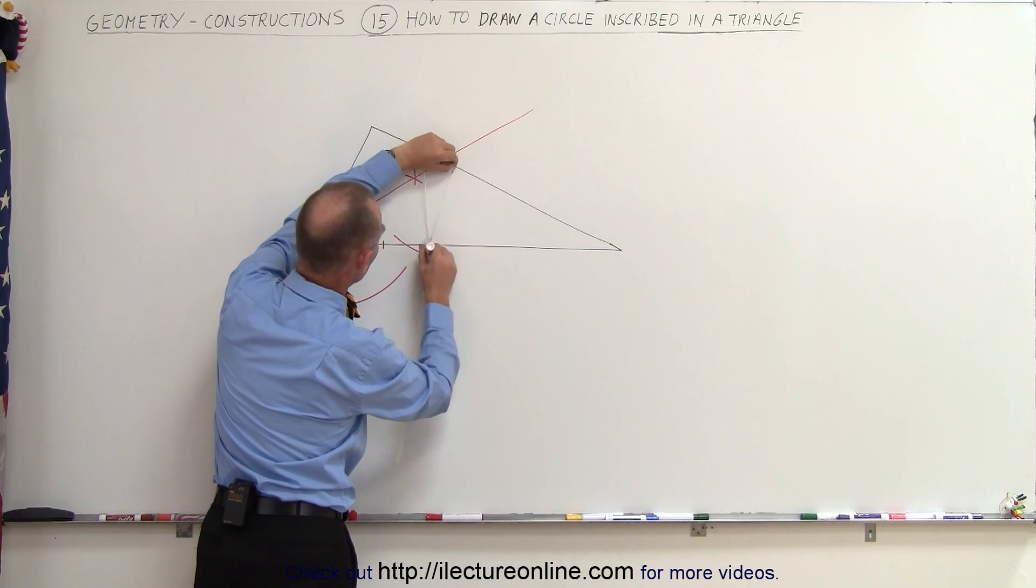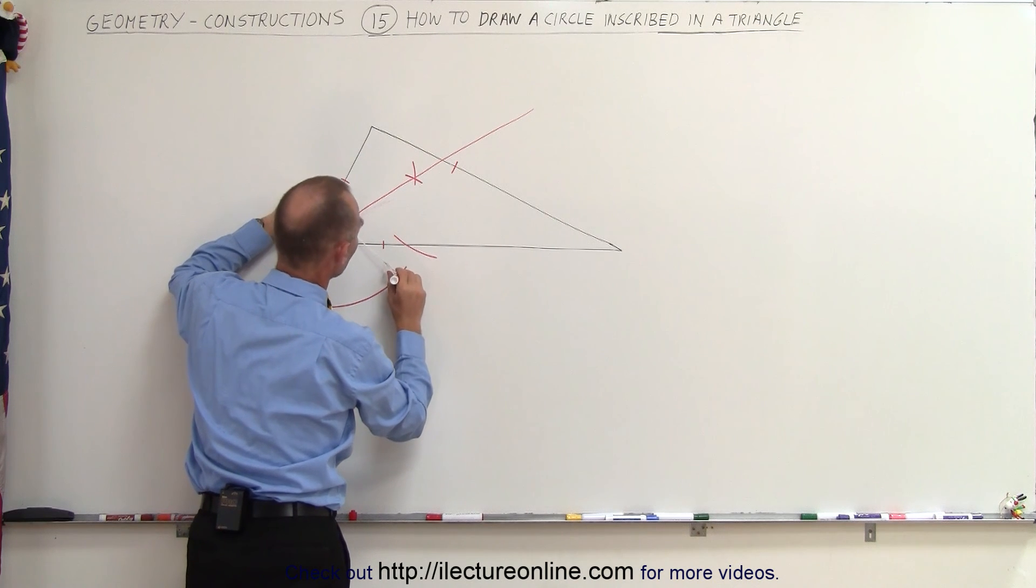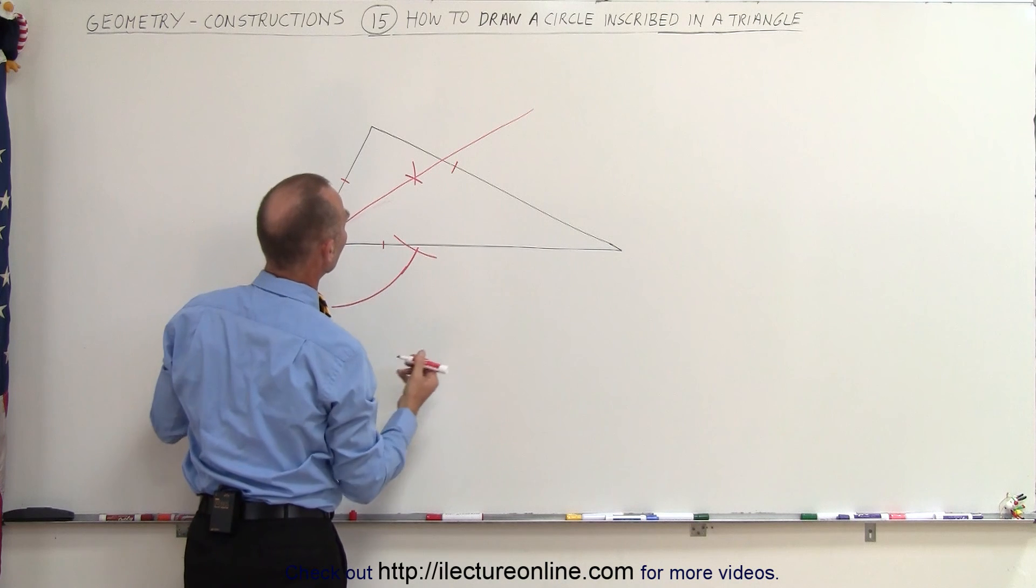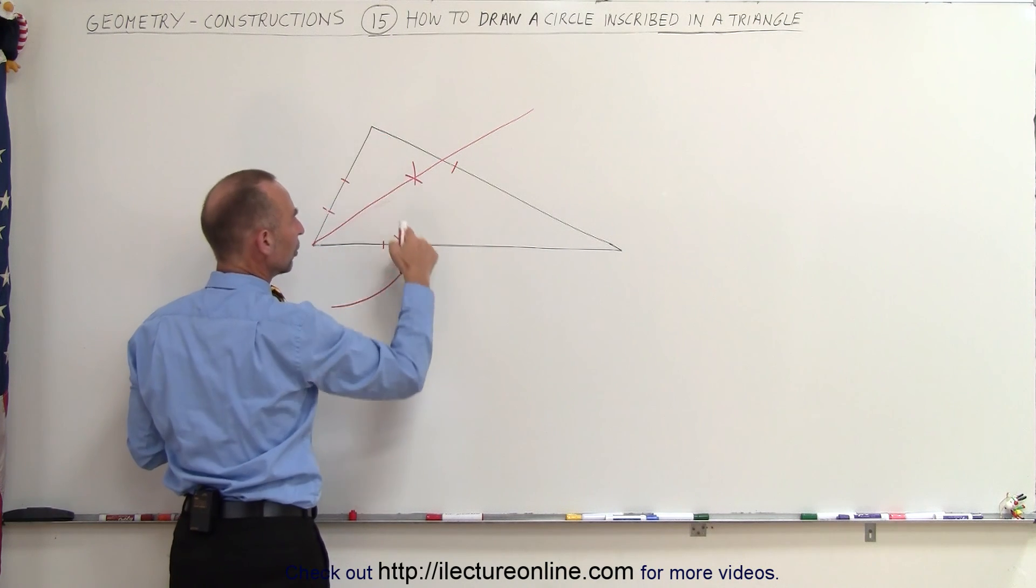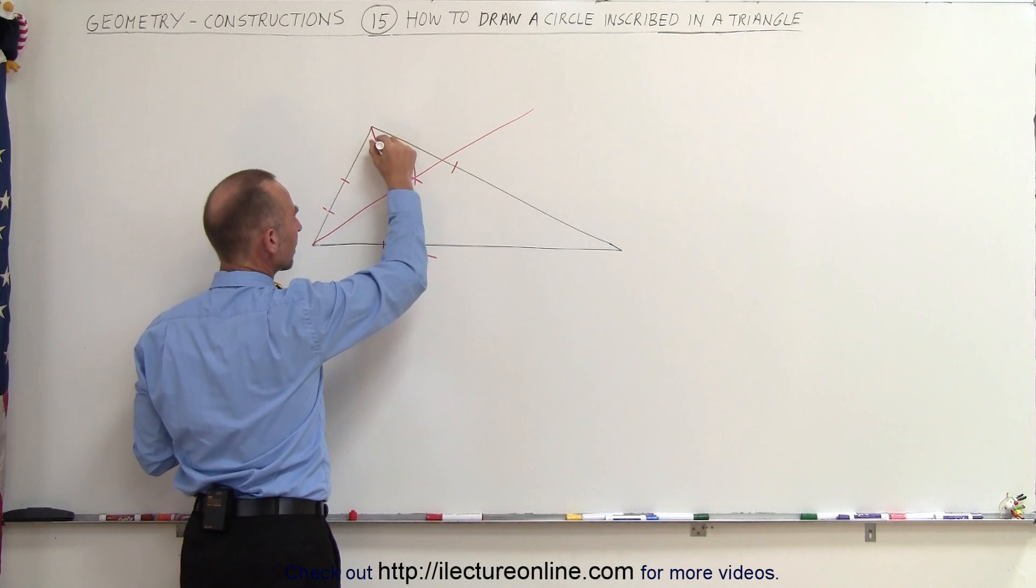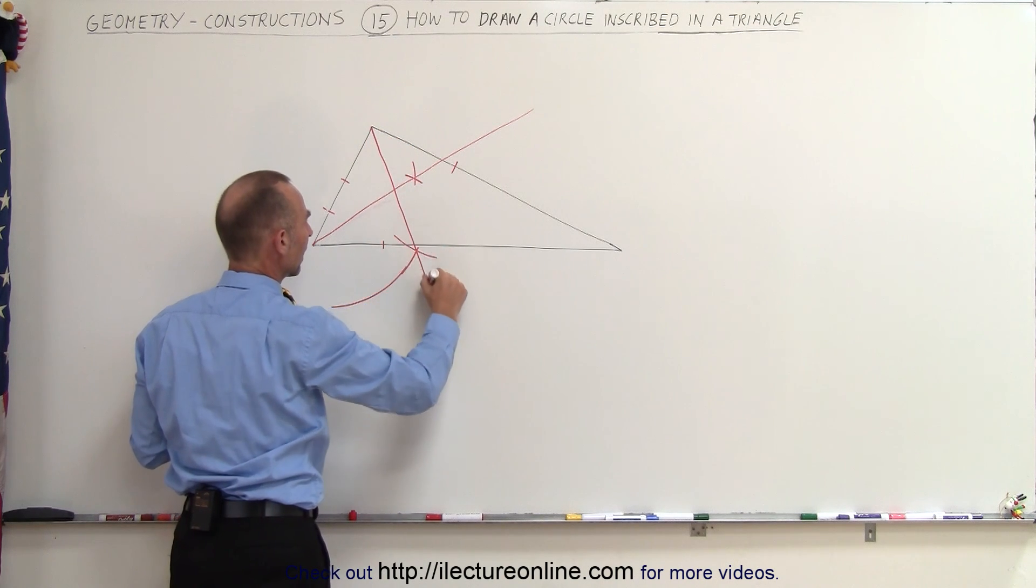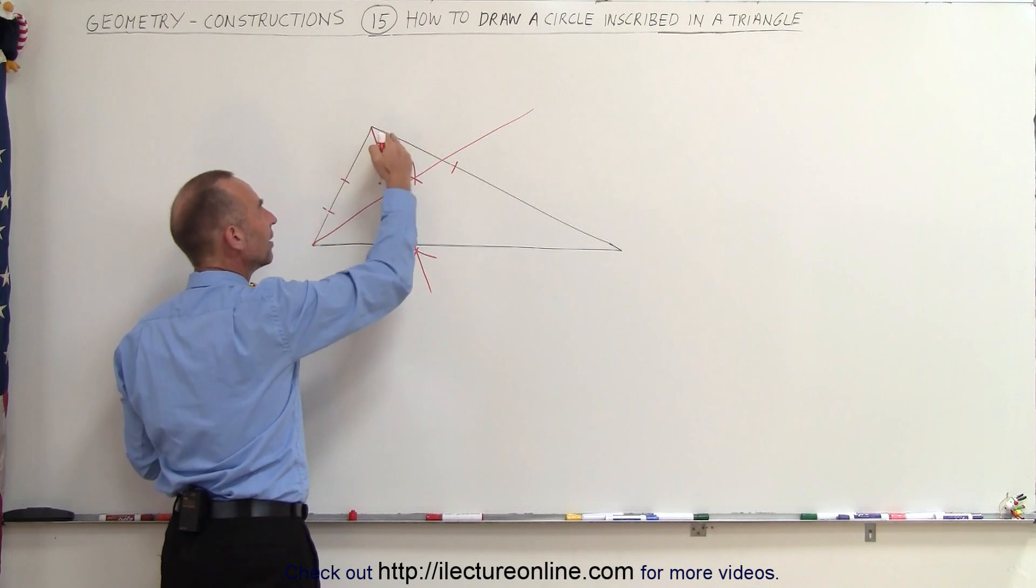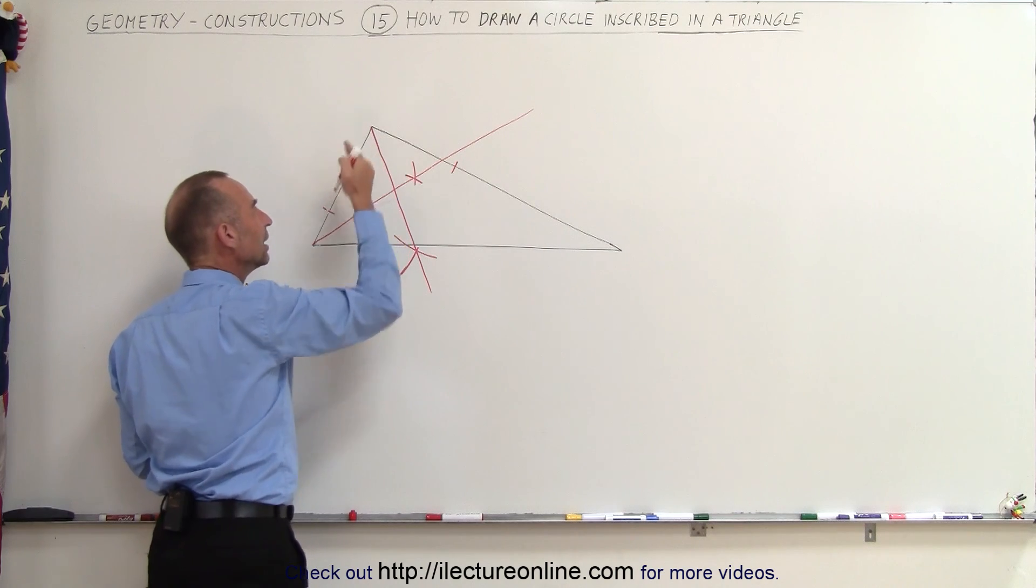I come over here and make an arc. I'll have to make that one a little bit longer, otherwise they don't cross. Here we go. So now I can draw a line from this corner to where those two meet, and again this line will divide this angle into two exactly equal angles.